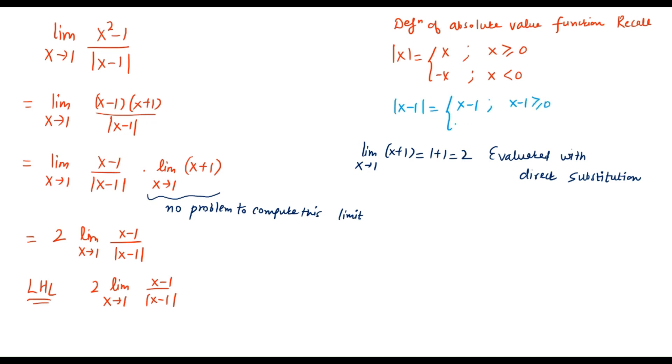You simply replace x with (x minus 1) in the definition of absolute value function. You will get the substitution for mod of (x minus 1), which is (x minus 1) if x is greater than or equal to 1, and it is negative of (x minus 1) if x is less than 1.